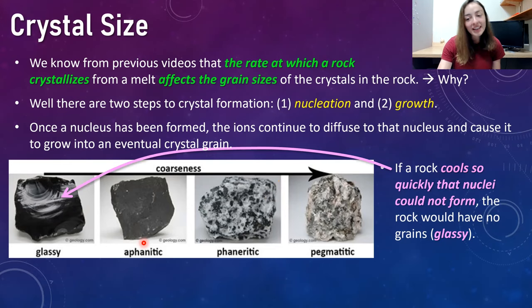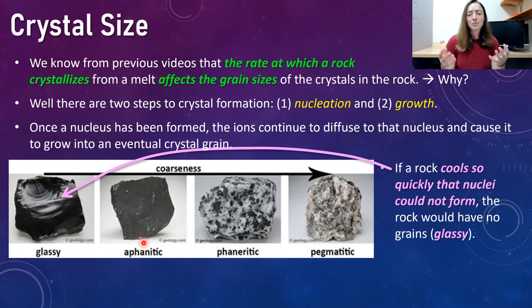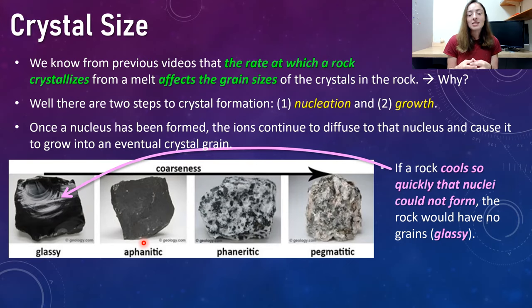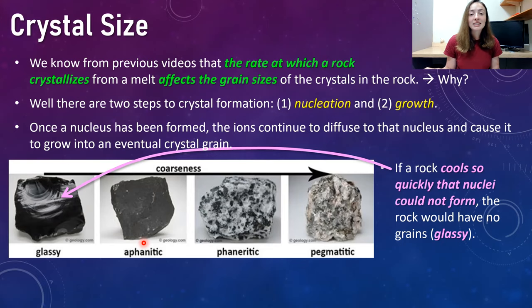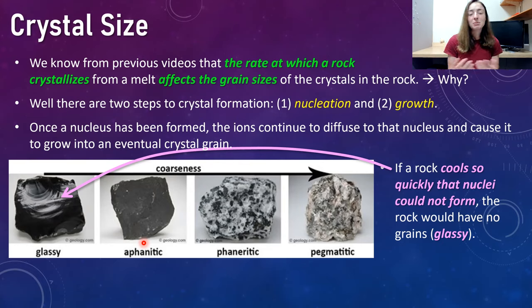If a rock cools so quickly that nuclei don't even have time to form, it will all just be grainless — or one mass, you could think of it as. It's called glassy because you just form this one mass that has no grains. You didn't have time to nucleate and you didn't have time to grow anything — it's just grainless, it's glassy. That's how glass forms: it cools basically instantly. The rock specifically is called obsidian, but the texture is glassy.